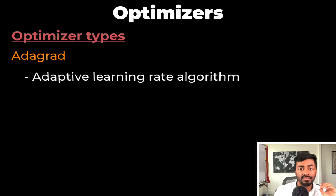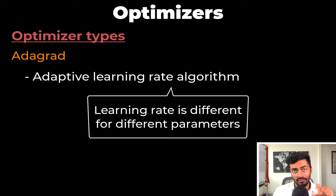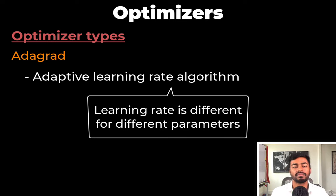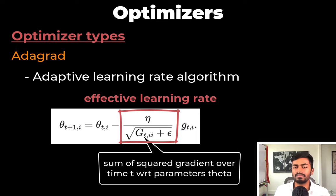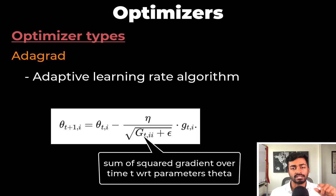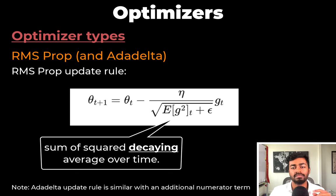Next is Adagrad — an adaptive learning rate algorithm, meaning the learning rate can be different for different parameters. In Adagrad's case the learning rate depends on the gradient, so parameters with large gradients will have a smaller learning rate, while parameters with smaller gradients will have a larger learning rate. However, there's a problem: the denominator is a sum of squared gradients over time, which can increase to an arbitrarily large number, causing the overall learning rate to become close to zero. To combat this, two optimizers were developed independently.